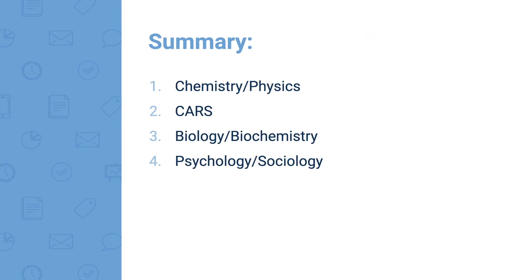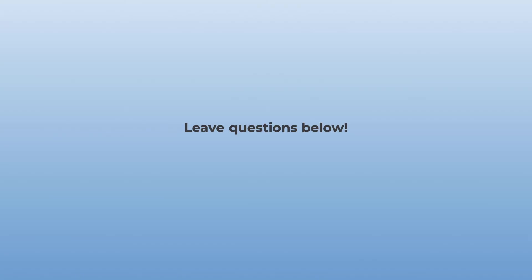To conclude, the four sections of the MCAT are: Chem-Phys, then CARS, then Biology and Biochemistry, and then Psychology and Sociology. I hope this was helpful. If you have any questions about the section breakdowns on the MCAT, I'd be happy to help — please leave any questions below. Thank you.